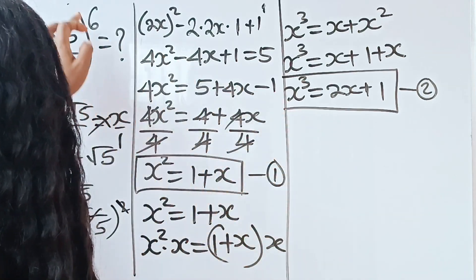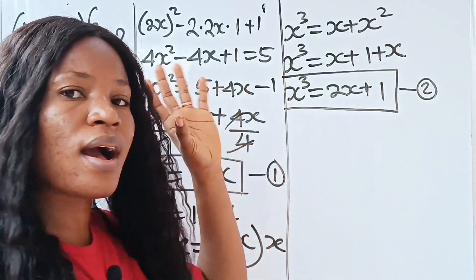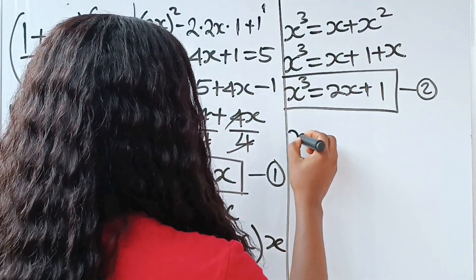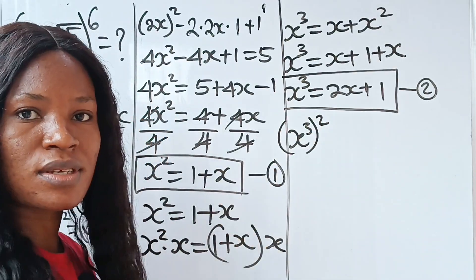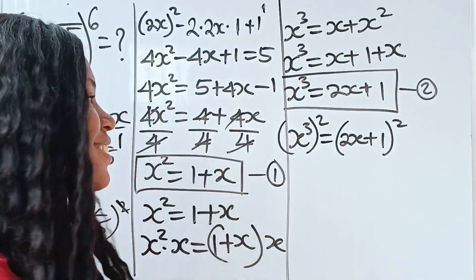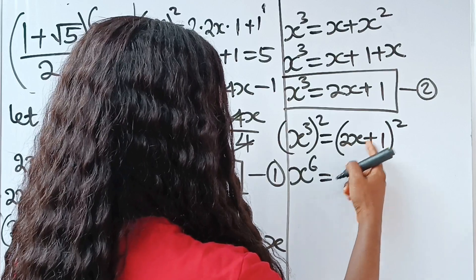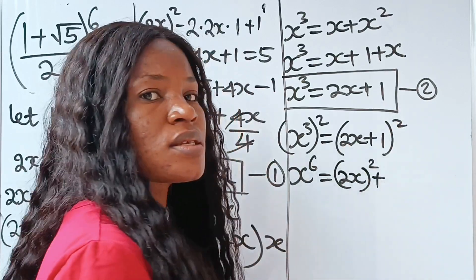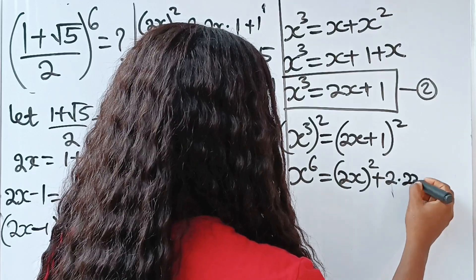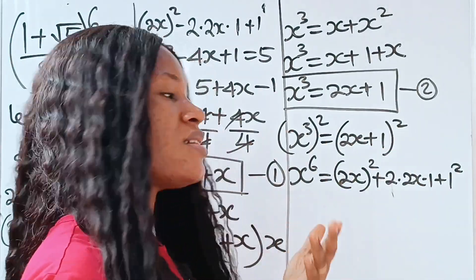We have gotten x³ = 2x + 1. Recall that what we are looking for is x⁶. So what we need to do is square x³, since (x³)² = x⁶. So x to the power of 3, squared, equals (2x + 1)². Using the (a + b)² identity: a² is (2x)², plus 2ab which is 2 × 2x × 1, plus b² which is 1².